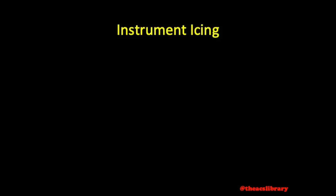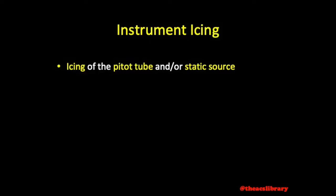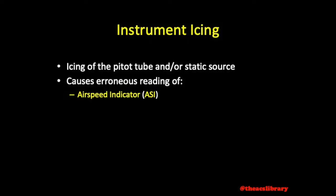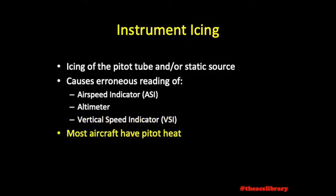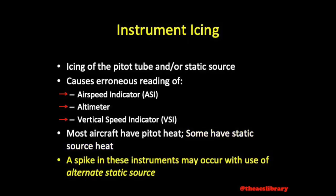Instrument icing occurs as the pitot tube and/or outside static source ice over, causing the airspeed indicator, altimeter, and vertical speed indicator to be rendered erroneous or even inoperable in more severe cases. Most aircraft are equipped with pitot heat, and some are equipped with static source heating. An alternate static source may be available. A spike in the three instruments mentioned above may occur as the alternate static source is activated.